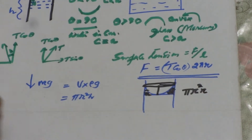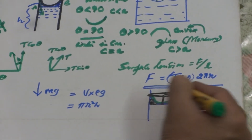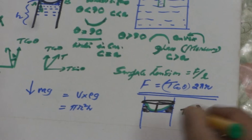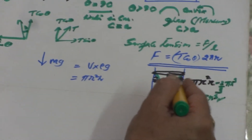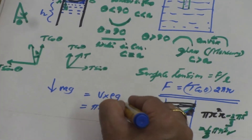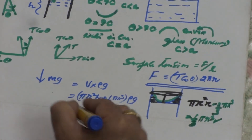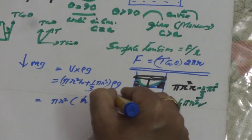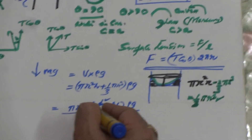To account for the liquid in the gap, we consider a cylinder of radius r with height r, giving volume πr³, minus the volume of the hemisphere which is (2/3)πr³. The resultant extra volume is (1/3)πr³. Adding this to the cylindrical volume, the total weight becomes πr²(h + r/3) × ρg, taking πr² as common. Our aim is to calculate the capillary ascent height h.